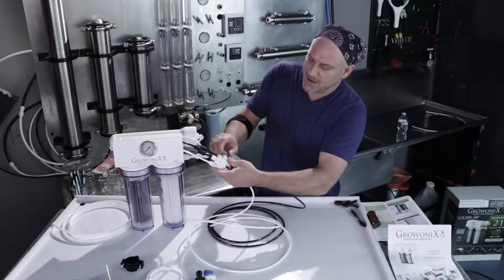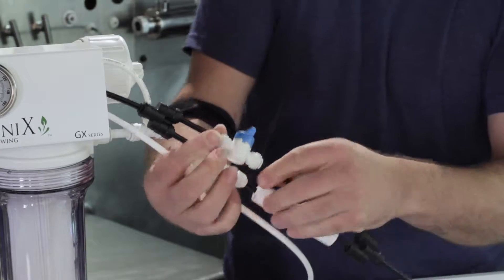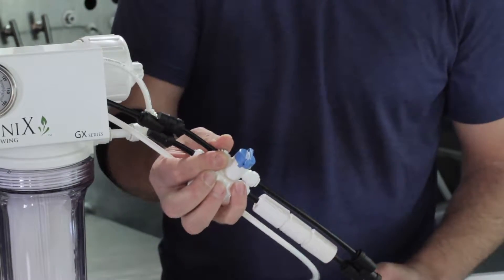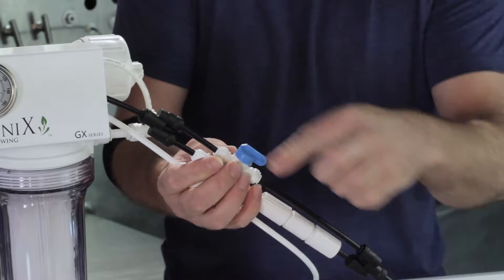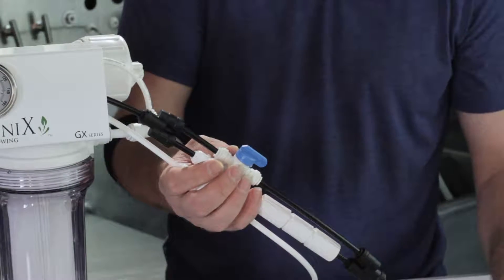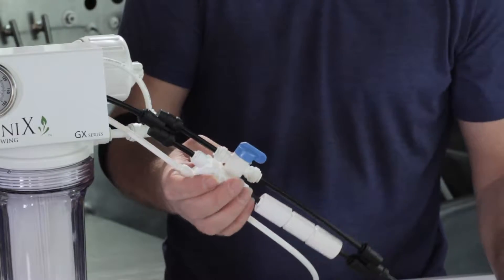And make sure the flush valve is open. Closed is when it is perpendicular to the line, the black line. Open is when it's parallel to the black line. So on initial startup we want the flush valve open parallel to the black line.